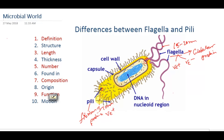Whereas if we consider pili, it is responsible for adherence — that is, attaching to surfaces. It also transfers DNA from one cell to another during conjugation, which is genetic exchange. Pili also performs motility. These are the functions of these two structures, pili and flagella.